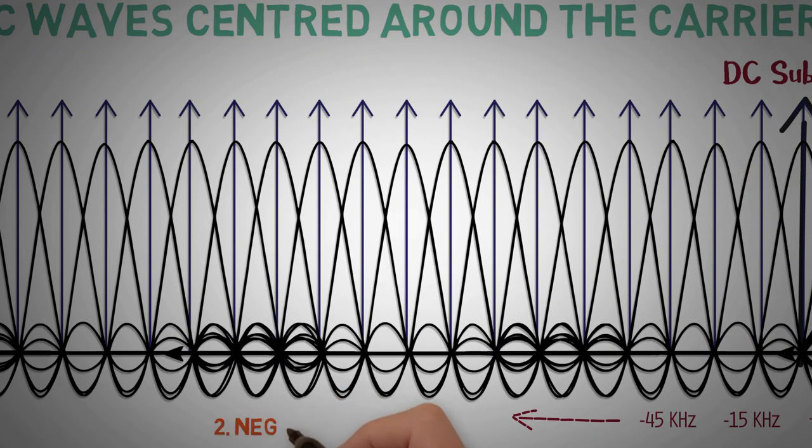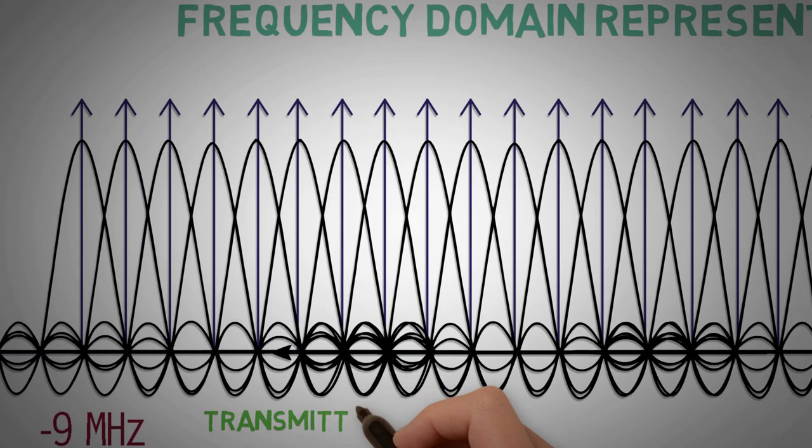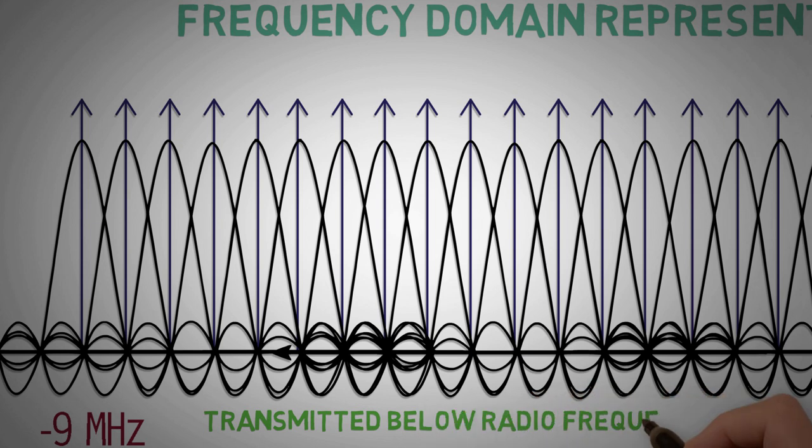Secondly, presence of negative frequencies. It can be explained by the fact that the sub-carriers are transmitted below the radio carrier.